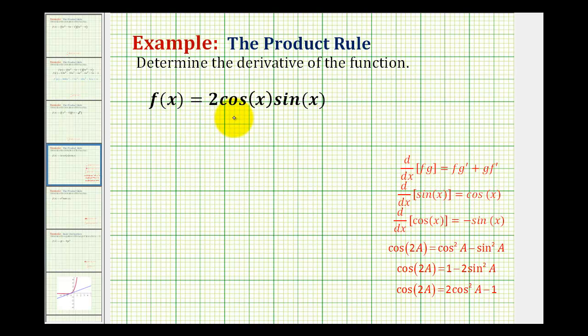To determine the derivative of f(x) = 2cos(x)sin(x), we need to recognize this as a product of two differentiable functions. The first function will be 2cos(x), which we'll call f, and the second function will be sin(x), which we'll call g.